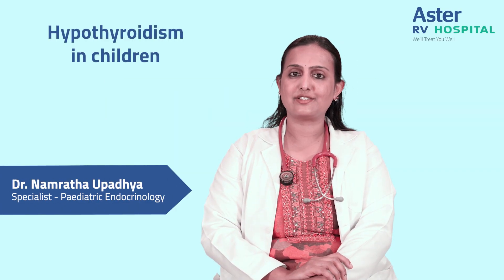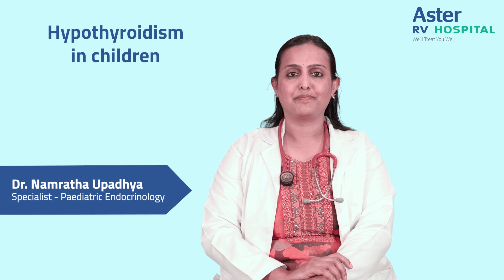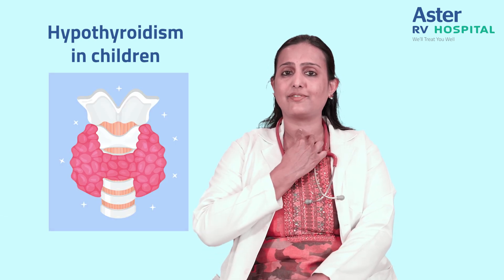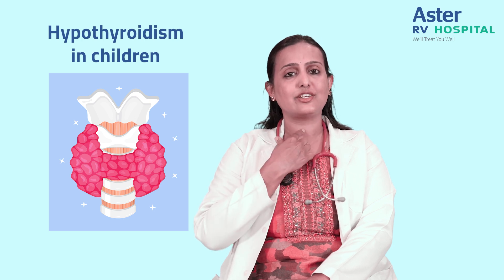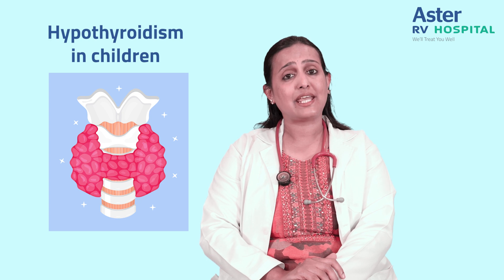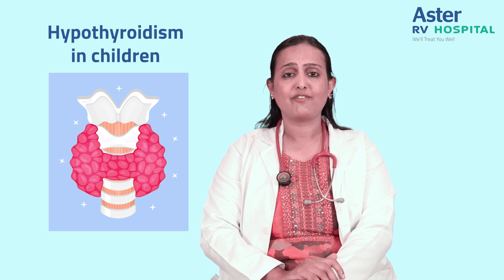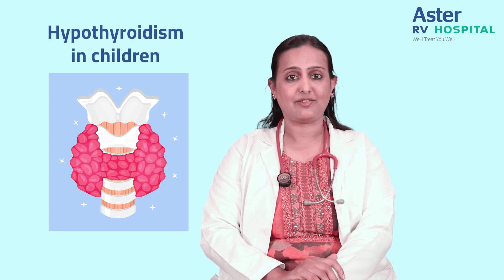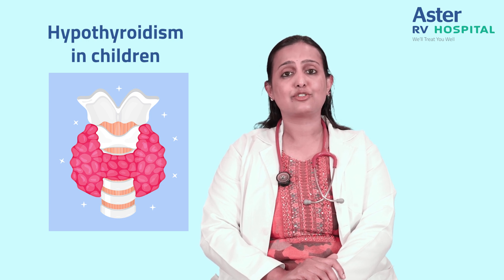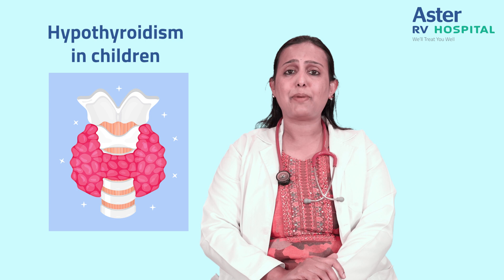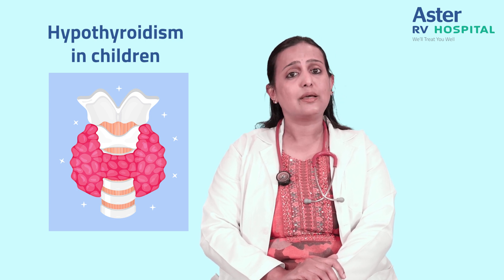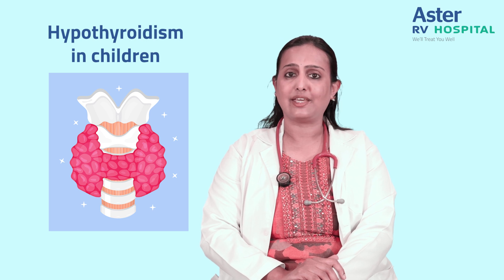Let's talk about hypothyroidism in children. The thyroid gland is a small butterfly-shaped organ situated in front of the neck, just above the collarbone. The thyroid gland makes thyroid hormones, measured as T3 and T4, which play a very important role in your child's normal growth and development, apart from ensuring that energy needs, metabolism, heart, muscle, and other organs are working well.